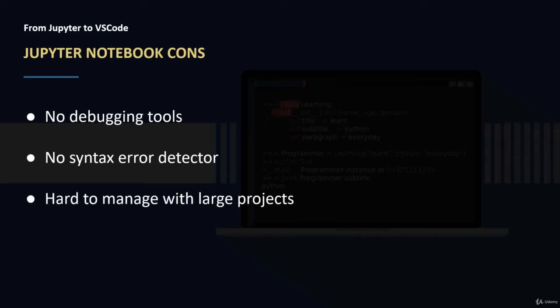The third problem with Jupyter Notebook is that it's hard to manage with larger projects. Whenever you are working with a large project and you have many files, it can be a little bit hard to maintain your work and to see what's happening in other parts of the code. So we need a project manager, and code editors and IDEs are excellent for managing projects.